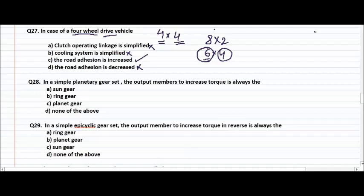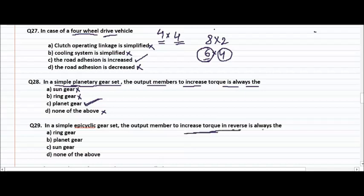In a simple planetary gear set, the output member to increase torque is always the planet gear — not the sun gear or ring gear. Similarly, in a simple epicyclic gear set, the output member to increase torque in reverse is also the ring gear, not the sun gear or planet gear.